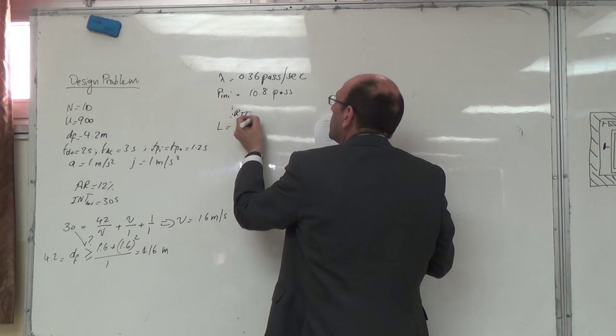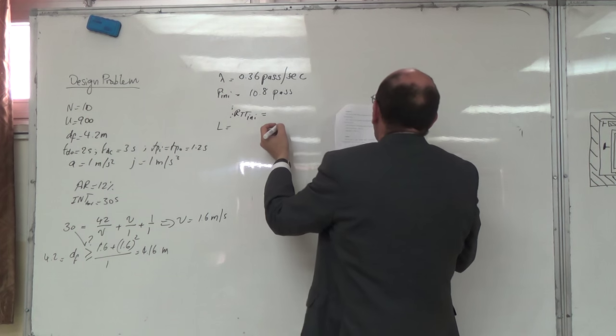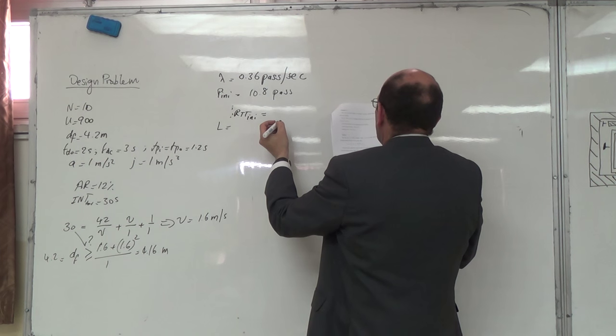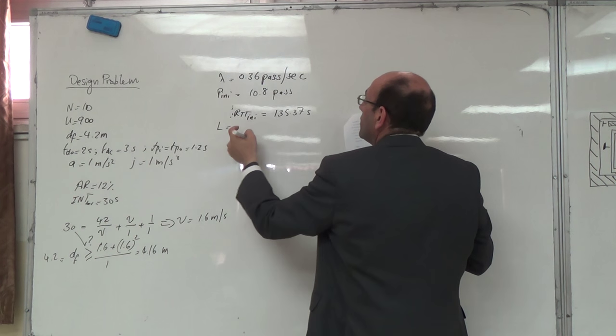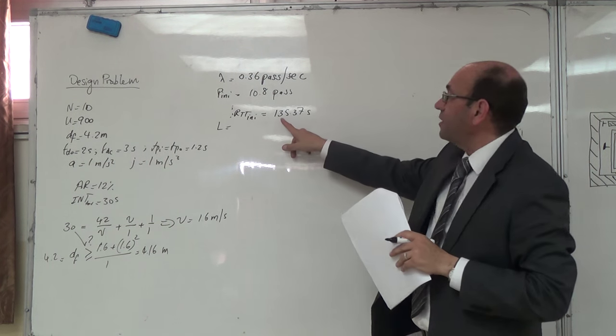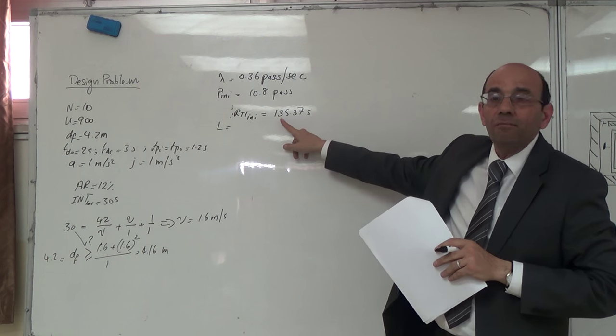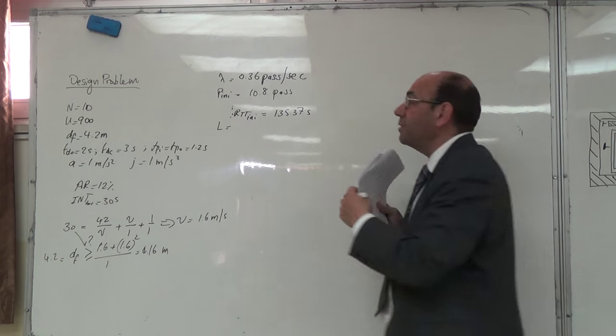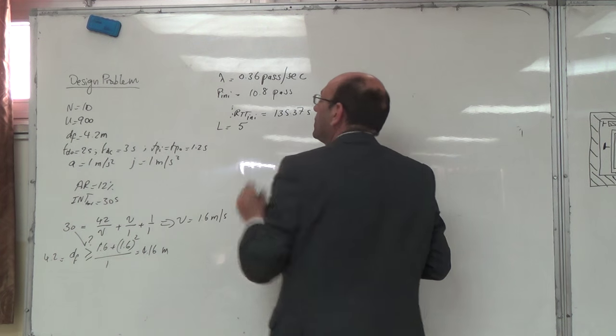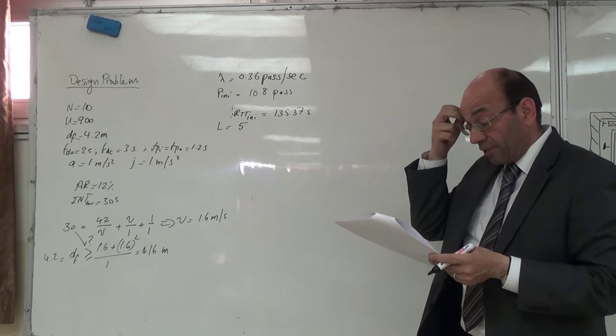RTT initial بتطلع 135.37 seconds. بقسمها على 30 بتطعطيني. ليش لازم يطلع معي L. مش موصل 150 هذا. 120 أربعة، 150 خمس. ماشيين؟ مضبوط لازم يطلع معي 5 elevators من هون.